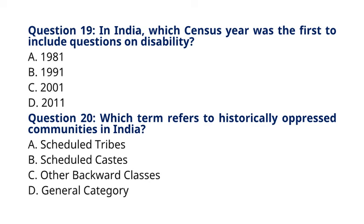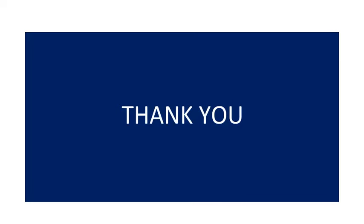Question 20: Which term refers to historically oppressed communities in India? A. Scheduled Tribes. B. Scheduled Castes. C. Other Backward Classes. D. General Category. The correct answer to question 20 is option B: Scheduled Castes. Explanation: Scheduled Castes refer to historically oppressed communities who were subjected to social discrimination. Thank you everyone. Don't forget to subscribe to my YouTube channel Education and Teacher Education at Shoki Milal.